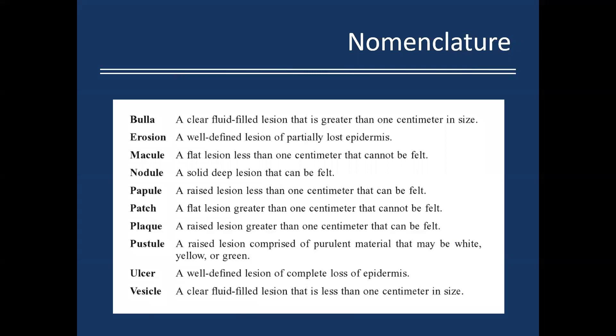As a quick review: a bulla is a clear fluid-filled lesion greater than one centimeter in size. A vesicle is a fluid-filled lesion less than a centimeter. An erosion is a well-defined lesion with partial loss of the epidermis. And then an ulcer — you have complete loss of the epidermis.